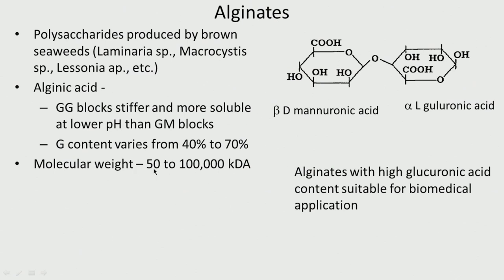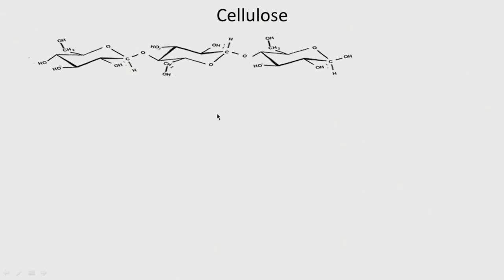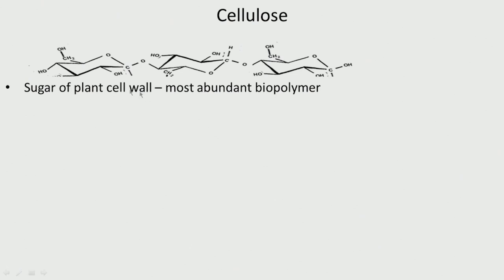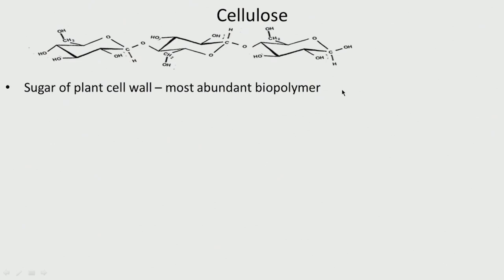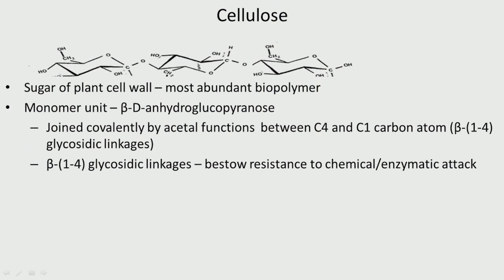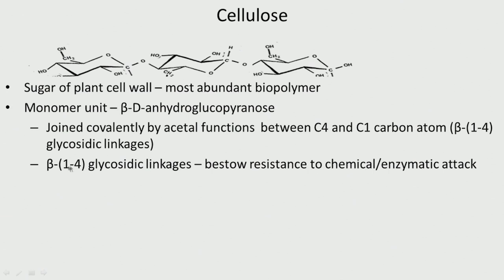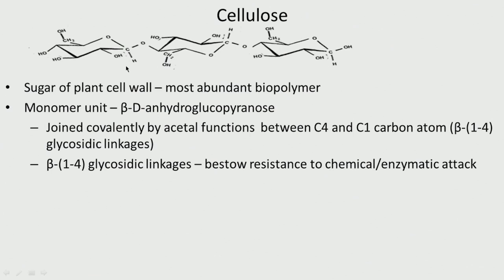Alginates can be used for drug encapsulation. Cellulose is found in the cell wall of plants and is the most abundant biopolymer. We have anhydroglucopyranose units connected by a beta linkage, joined covalently by acetal functions between C4 and C1. This beta 1,4 glycosidic linkage bestows resistance to chemical and enzymatic attack. These are linear chains with 1000 to 1500 monomer units, representing quite a large molecular weight.